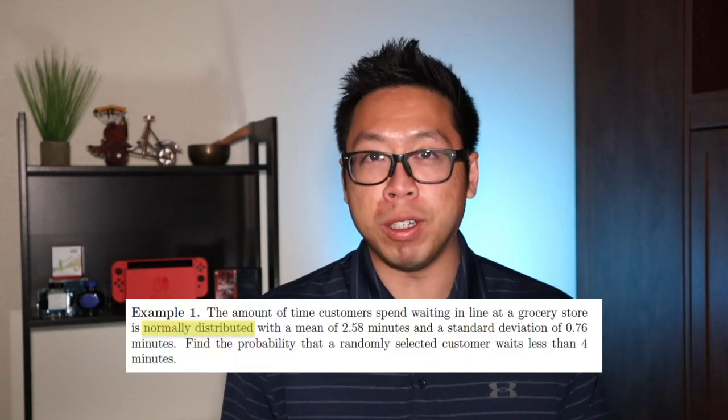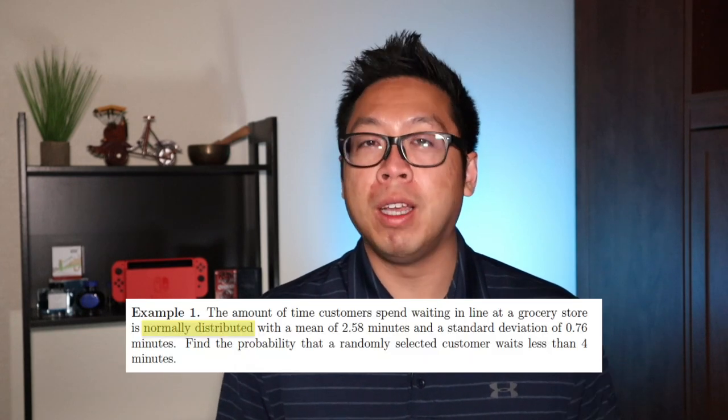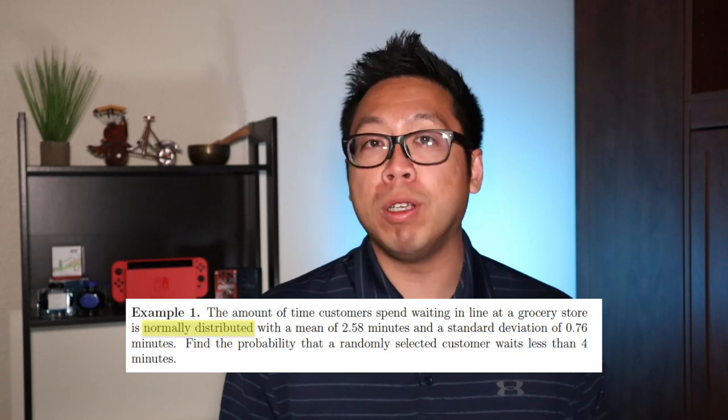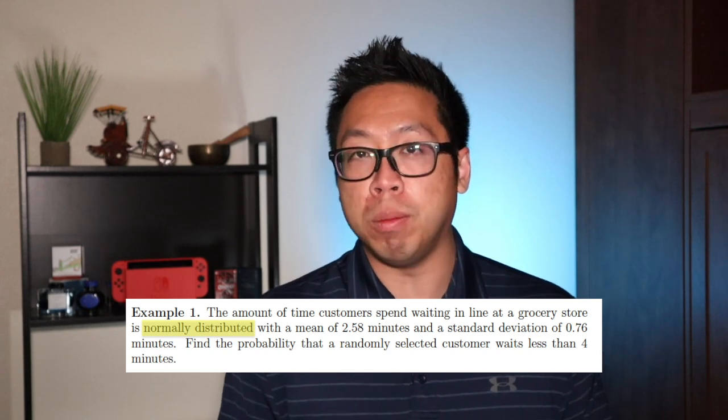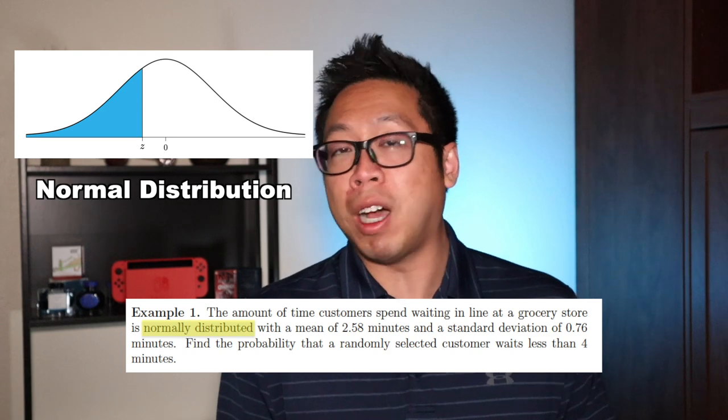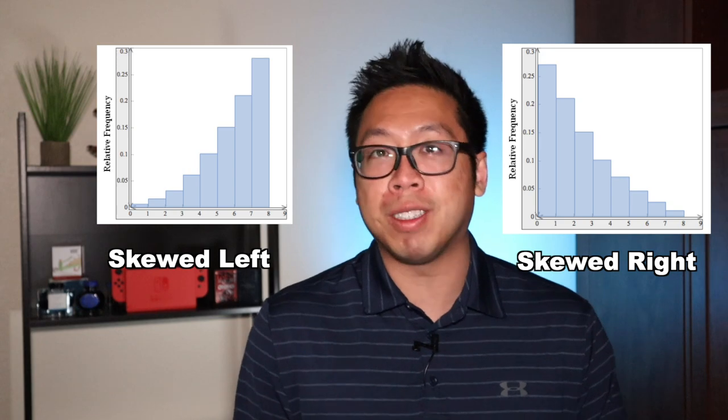In the last lecture, we used the normal distribution to help us answer some questions. I was careful in every situation to include the words 'normally distributed,' because the tools PNORM and QNORM in R only work if our distribution is normal. Now the question is: what do you do when your distribution is not normal? We've seen distributions that were skewed left or skewed right, and in statistics we often don't even know what the distribution looks like.